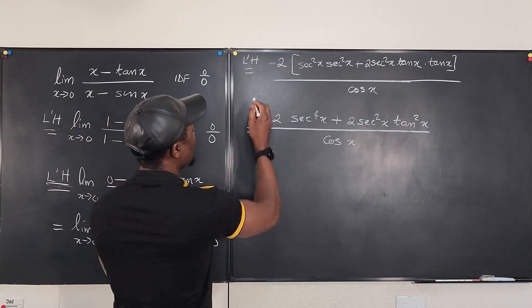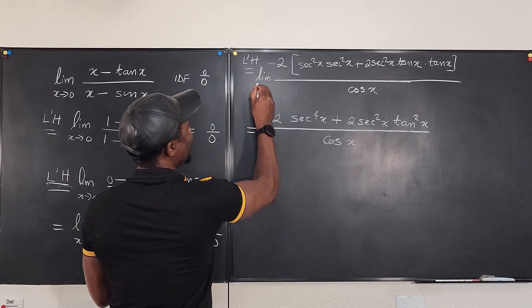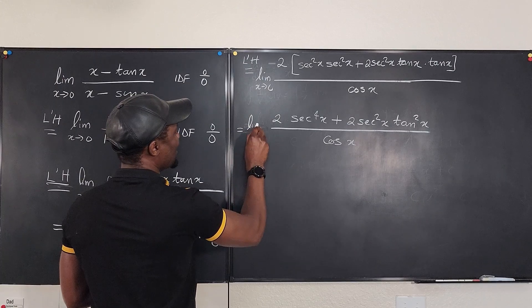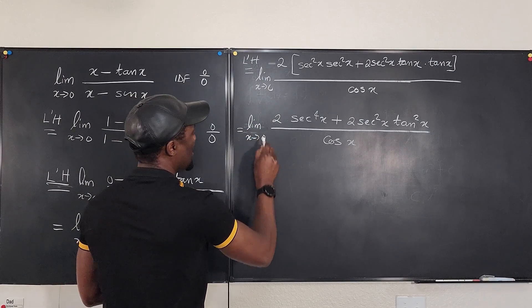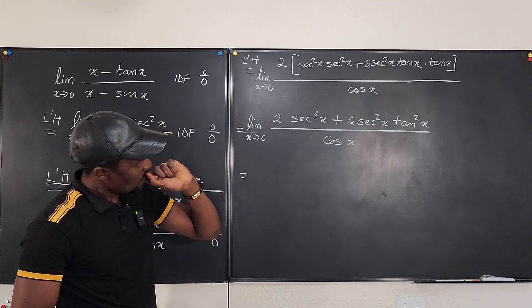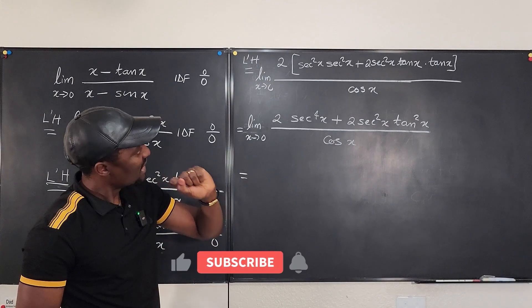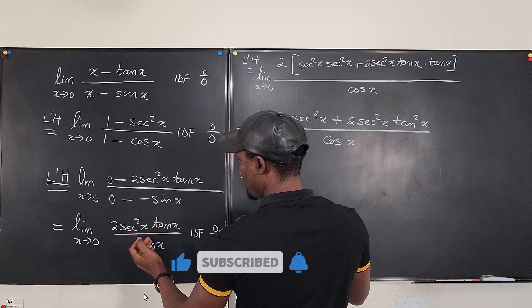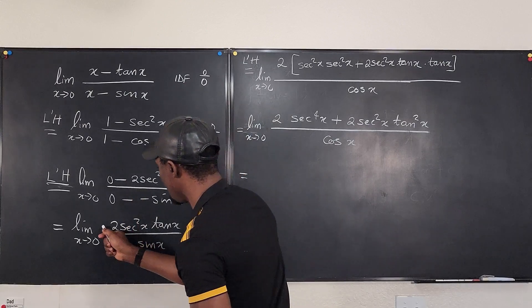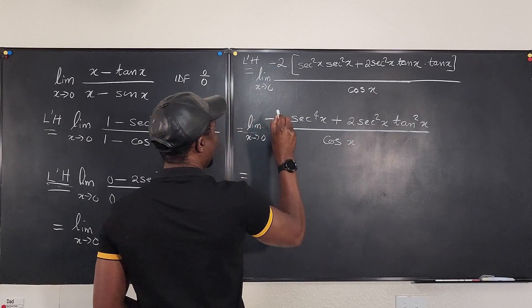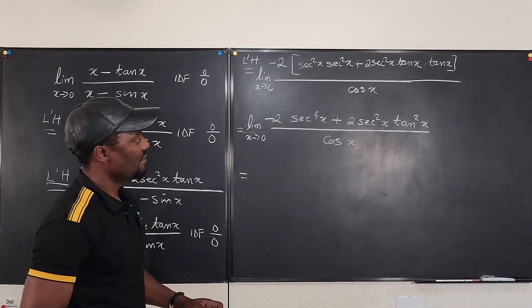But we have to put the limit. Hey, limit as x goes to 0. Never forget that. Limit as x approaches 0. So what do you think this is going to be? Is anything missing? Oh, there was a minus sign here. Come on, never forget about the minus sign. Can we do a plugin?